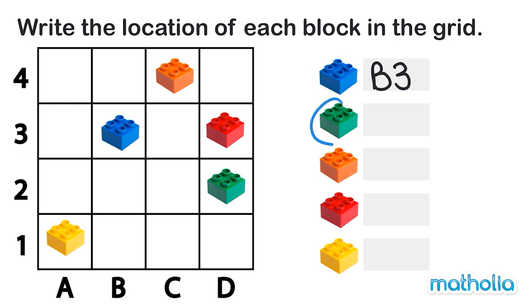Next we need to find the green block. The green block is here. Moving down we see that the green block is in column D, and moving across we see the green block is in row 2. So the green block is in position D2.